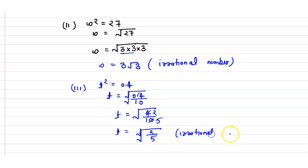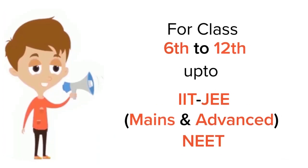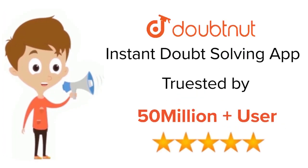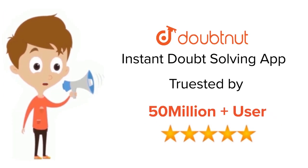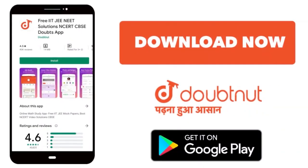In the given question, all three parts result in irrational numbers. Thank you. For class 6 to 12, IIT-JEE, and NEET level — trusted by more than 5 crore students — download the DoubtNut app today.